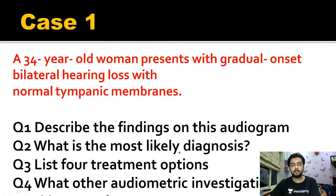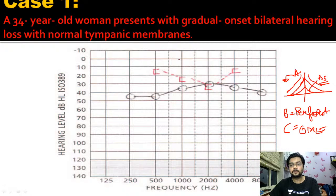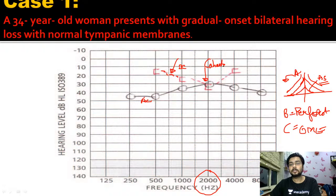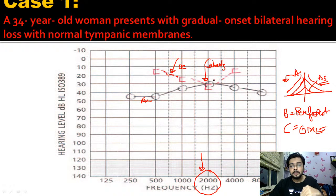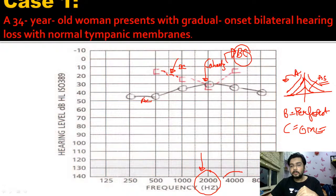Looking at the audiogram: the dotted line is the bone conduction curve and the continuous line is the air conduction curve. At 2000 Hz frequency you see a dip called Carhart notch. Why does this notch occur? Because everything in our ear has a resonating frequency. The stapes has a maximum resonating frequency at 2000 Hz, and so whenever sound reaches 2000 Hz, since the stapes is fixed, we get a notch or dip in hearing - the Carhart notch, present in the bone conduction curve.